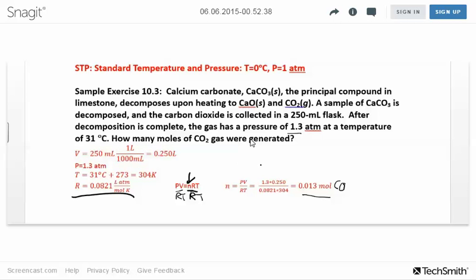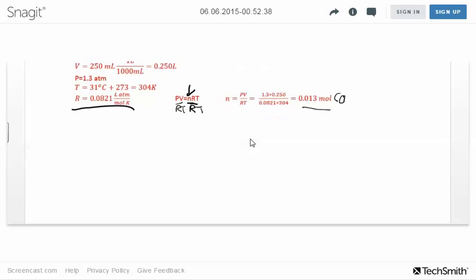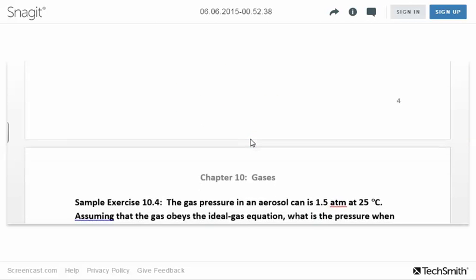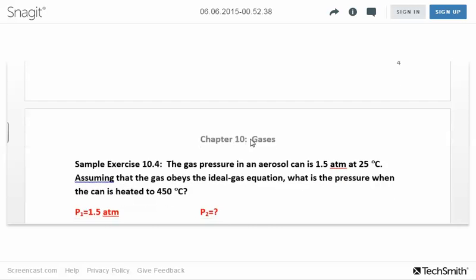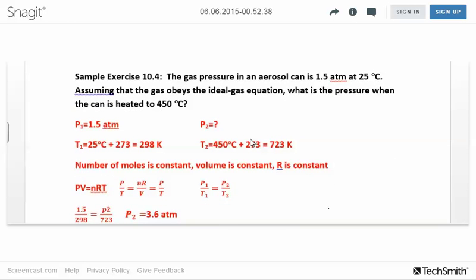Sample exercise 10.4: The gas pressure in an aerosol can is 1.5 atmospheres at 25 degrees Celsius. Assuming the gas obeys the ideal gas equation, what is the pressure when the can is heated to 450 degrees Celsius? I have pressure 1 at 1.5 atmospheres. The first temperature is 25 Celsius. Put that in Kelvin right away: 25 plus 273 gives 298 Kelvin.